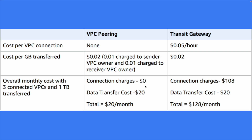For 1 TB of data transfer using VPC peering: fixed cost is $0, and data transfer cost at $0.02 per GB comes to about $20, so the total is $20 per month. For Transit Gateway, the fixed charges come to $108 per month per VPC connection, plus the same $20 data transfer cost, totaling $128 per month. Clearly, VPC peering is much cheaper — you only pay for data, not for the connection itself.